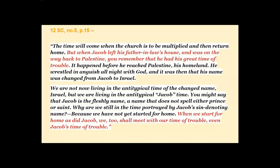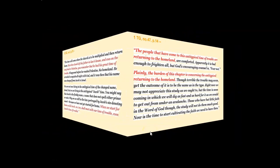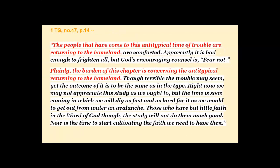The next reference is 12 Symbolic Code number five, page 15: 'But when Jacob left his father-in-law's house and was on the way back to Palestine, he had his great time of trouble.' This re-emphasizes that he was on his way back — he was traveling when he experienced this trouble. Then: 'When we start for home as Jacob did, we too shall meet with our time of trouble, even Jacob's time of trouble.' The authors of that timeline chart use a verse that actually supports placement after Ezekiel 9, yet use it to argue it's before Ezekiel 9. That makes no sense, brethren.